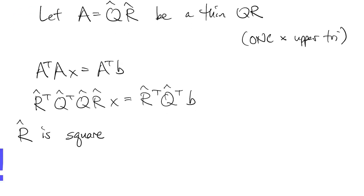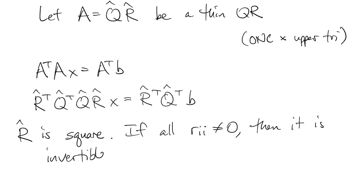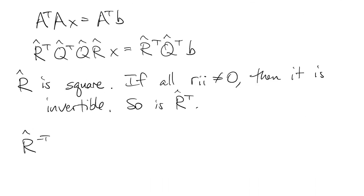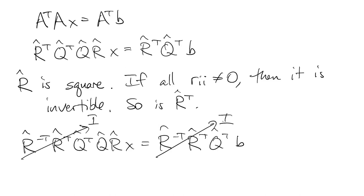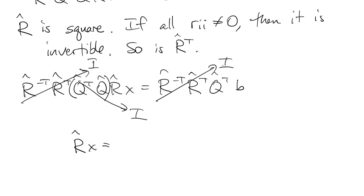And we plug in what we know about A from the factorization. R hat is square and upper triangular. So if all of its diagonal entries are non-zero, it's invertible, and so its transpose is invertible too. So we multiply both sides of that equation by R inverse transpose. And that cancels out the R's. And then the Q's cancel out by the ONC property. And all we're left with is this upper triangular square system for x.